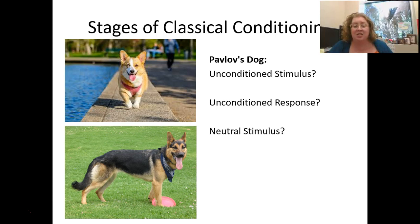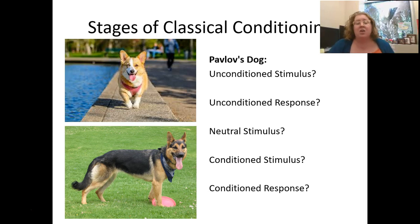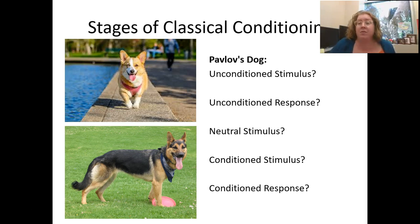Think about what the unconditioned stimulus, unconditioned response, neutral stimulus, conditioned stimulus, and conditioned response are as I explain the experiment. Pavlov had these dogs and was really interested in why dogs were salivating, especially when he brought them food. He noticed that when he brought the dogs food, they salivated — they were hungry, he brought them food, they salivated. Then he started ringing a bell every time he brought them food: ring the bell, bring the food, the dogs salivate. Then he noticed that when he rang the bell, even if he didn't bring them food, the dog still salivated.